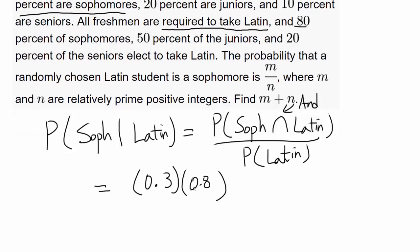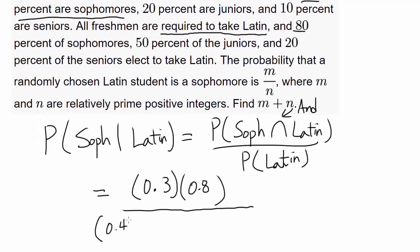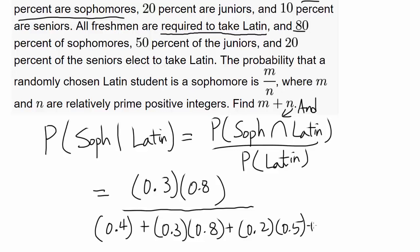And the probability that anyone takes Latin — we look at freshmen, sophomores, juniors, and seniors individually. For freshmen, there's 40% of students and 100% take it, so times 1. 30% are sophomores and 80% take it. 20% are juniors and 50% take it. And 10% are seniors and 20% take it.